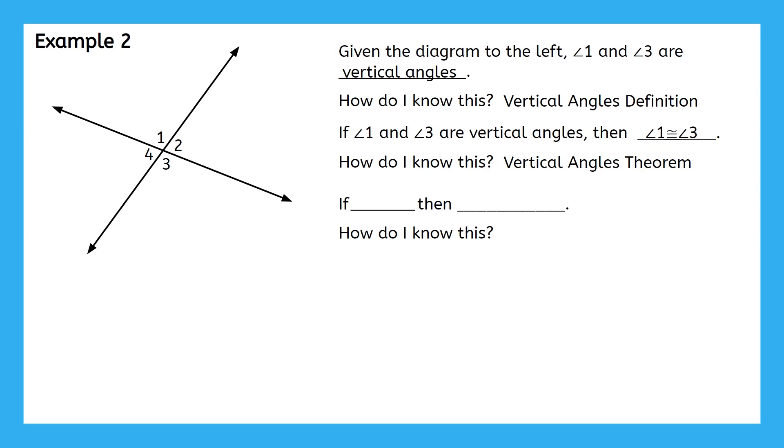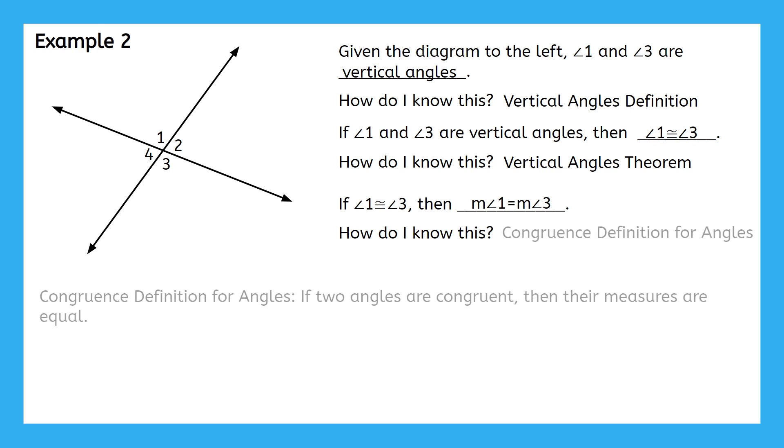Let's do this last one together. Now that we know that angles 1 and 3 are congruent, I also know that their measures are equal. Remember, since the measure of an angle is a number of degrees, we use an equal sign for it. We know this because of the congruence definition for angles. You'll find yourself using the definition of congruence a lot throughout this unit to move between a congruence statement and an equation.